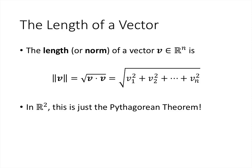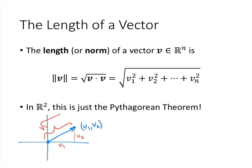The length of a vector, sometimes also called the norm, is simply the square root of the vector dotted with itself — the square root of the sum of the squares of its entries. If this seems strange, remember that in R^2 this is just the Pythagorean theorem. If a vector points from the origin to the point (v1, v2), the distance from the origin is sqrt(v1^2 + v2^2).